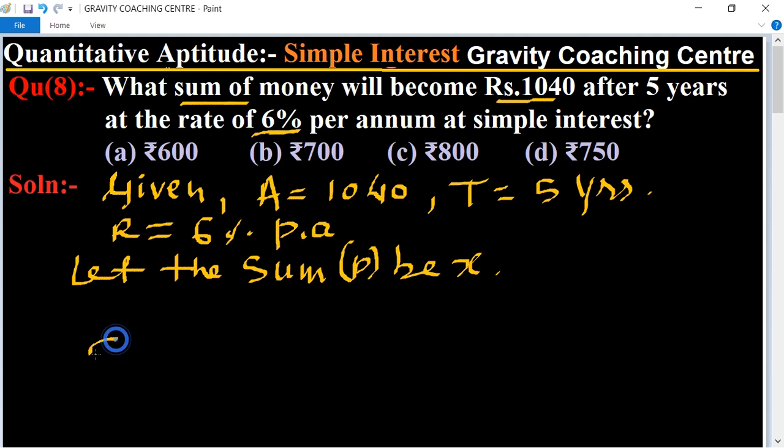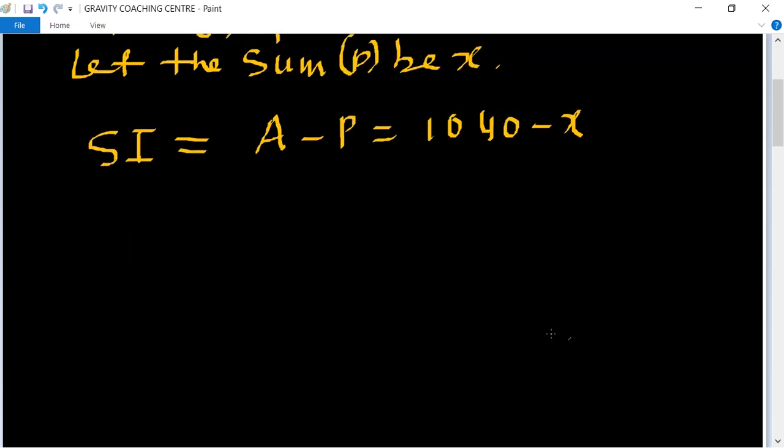And so we know that the formula of simple interest equal to A minus P, and amount equal to 1040 minus x. So therefore simple interest equal to...